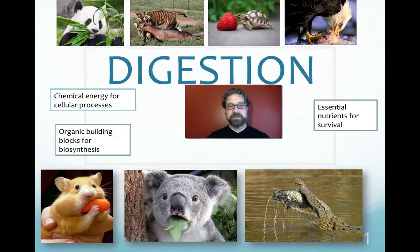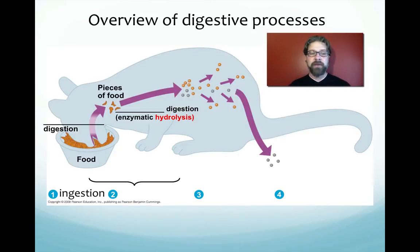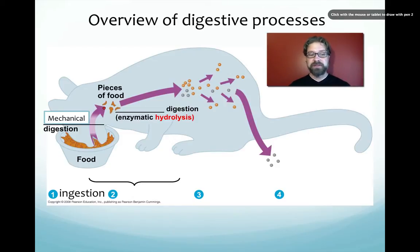Without those tiny nutrients, we become sick, our lifespan is shortened, and possibly our chance of reproduction is taken away. Now, if we look at the overall digestive process, we always start with ingestion — just the taking in of food into the body. In the case of a cat, it starts with mechanical digestion: going from large pieces of food to small pieces. The cat chews its kibble, breaking big pieces into little pieces.